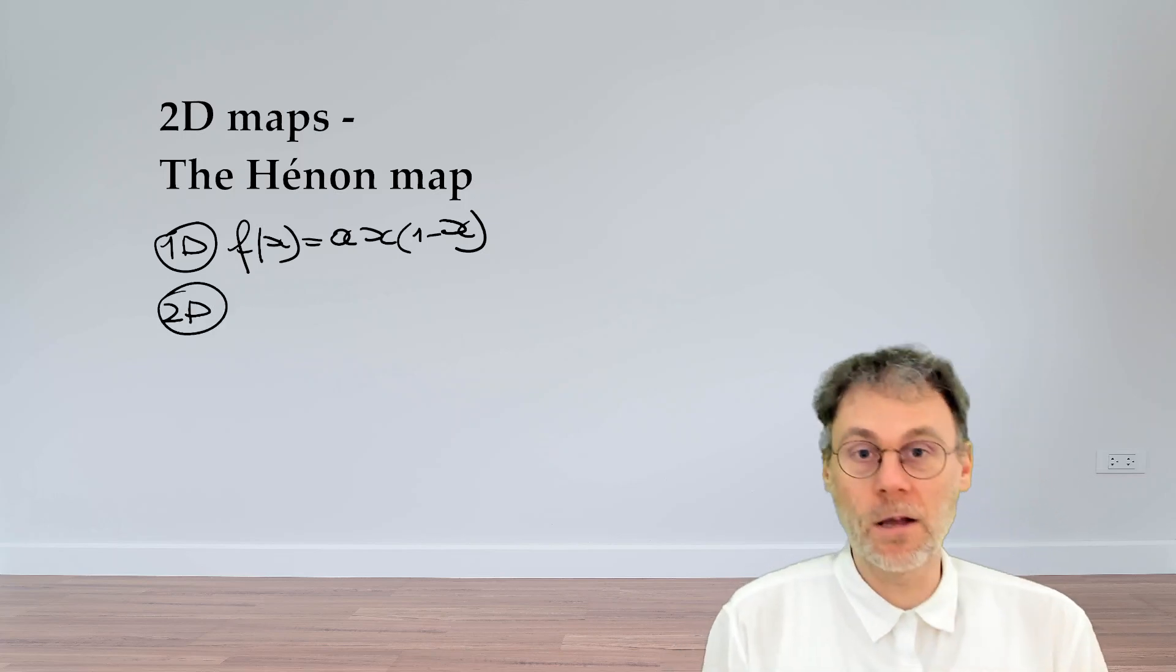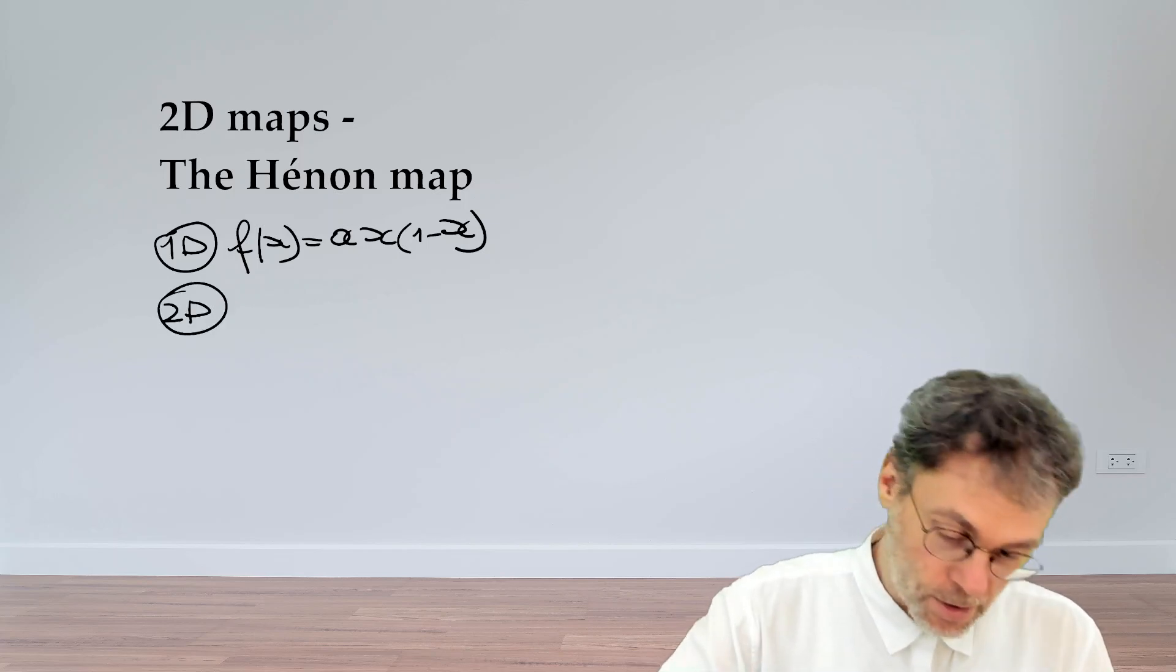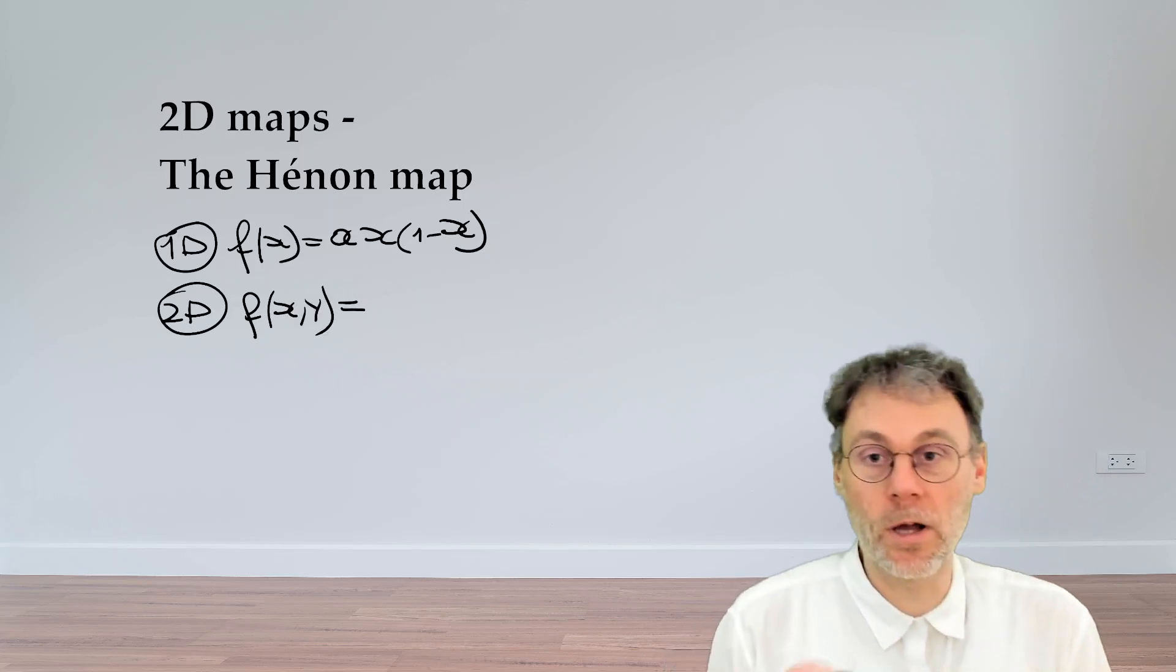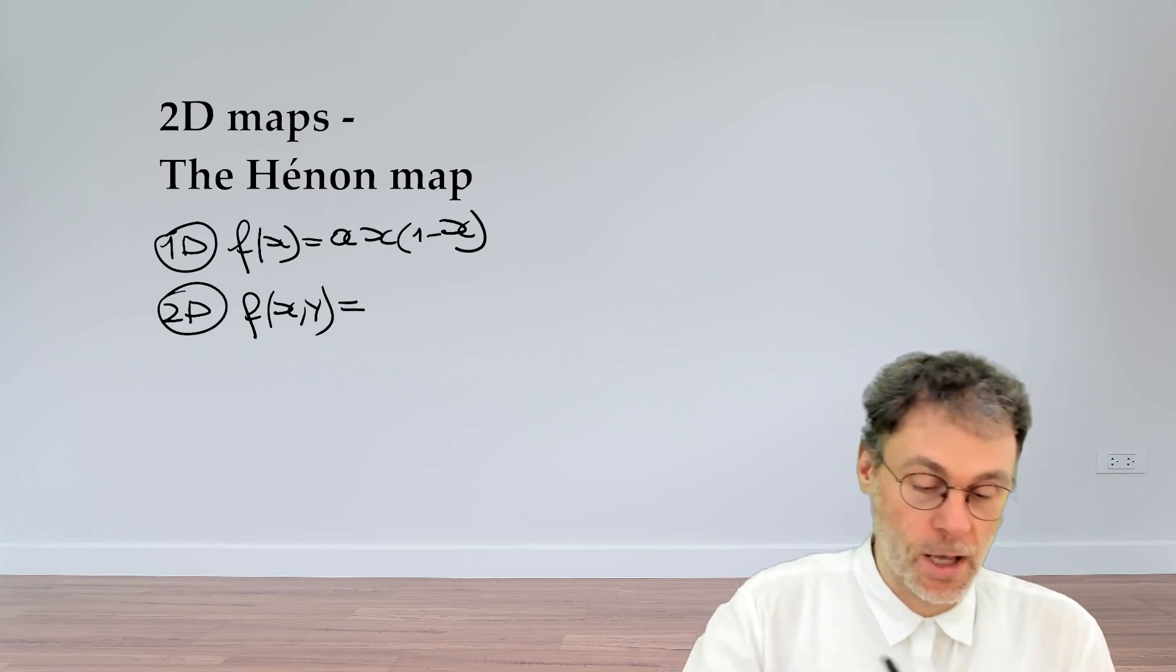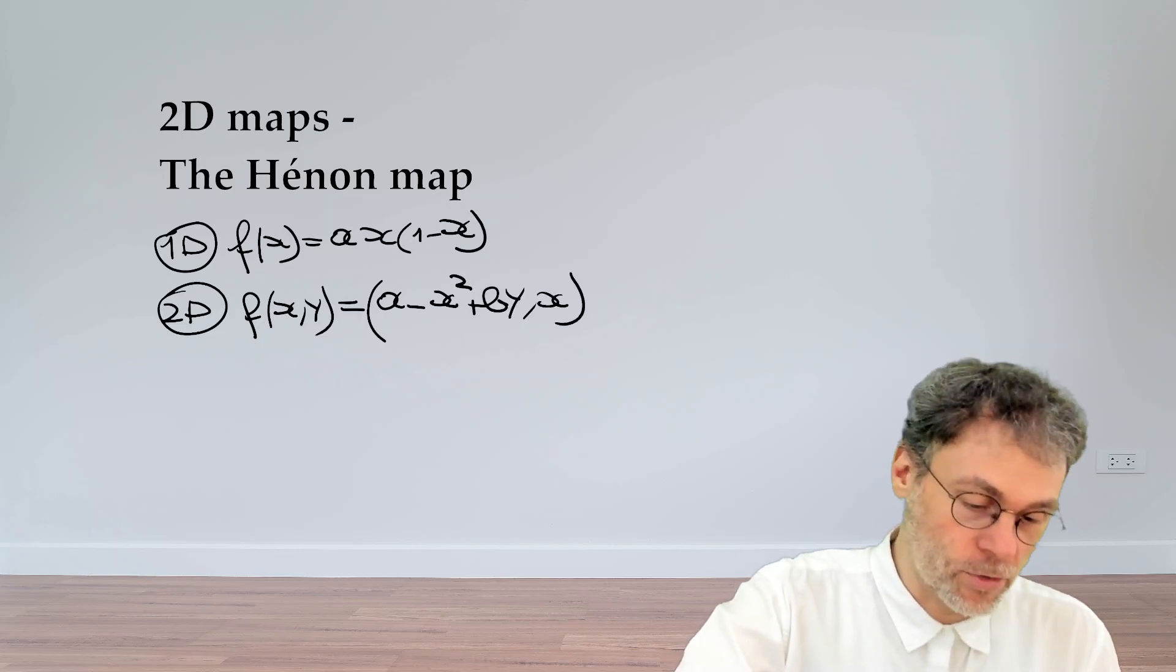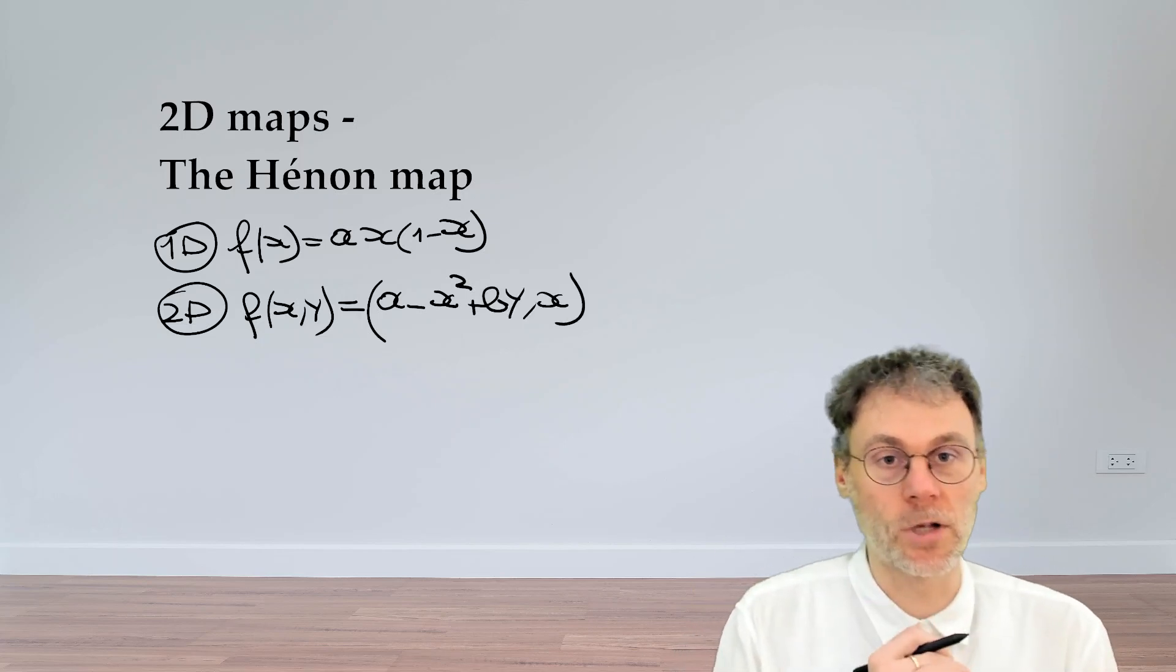The question is what are the 2D people studying? Well, they're studying the Hénon map, which is of course a function of x and y. You plug in two numbers x and y and you get out two numbers: the first is a minus x squared plus by, and the second number is x, so y and x change places here.